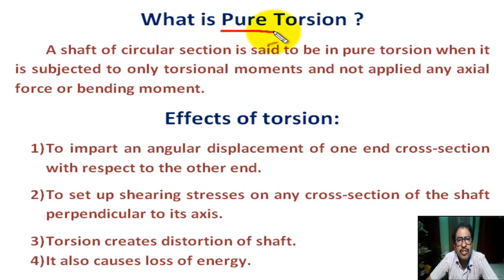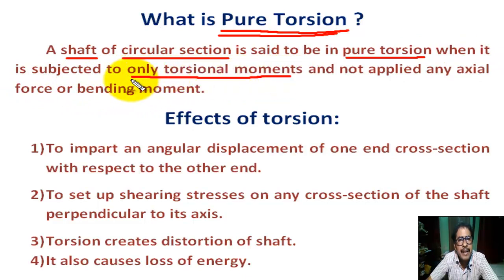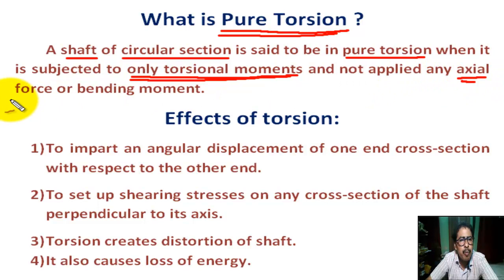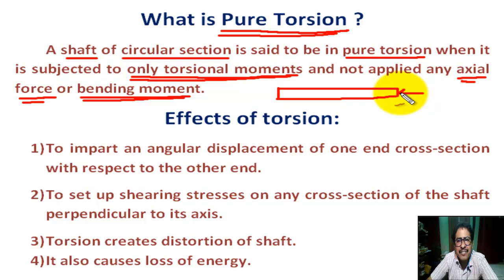Now, what is pure torsion? A shaft of circular section is said to be in pure torsion when it is subjected to only torsional moment — that is, only applied torsional moments, with no applied axial force or bending moment. Axial force means force acting along the axis of the shaft, and bending moment means force applied transversely to a beam.